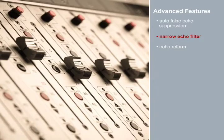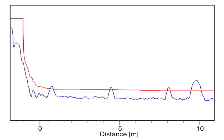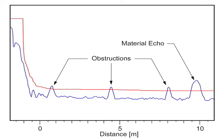Narrow Echo Filter. In applications where we have multiple obstructions caused by ladders or weld seams, we can get an echo profile that looks like this. To reduce the likelihood of these obstructions interfering with our true material echo, we can use the Narrow Echo Filter.